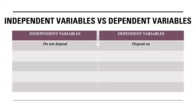The next difference is that independent variables are always controllable in nature. Since they do not depend on other variables, they are in control and are very clearly and vividly defined — they are not going to change on their own. Whereas dependent variables are completely uncontrollable; they depend upon other variables and change when there is a change in those other variables.